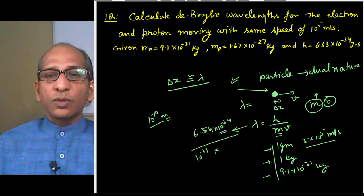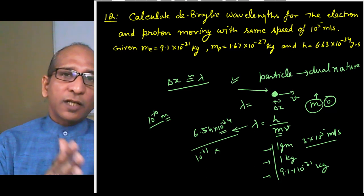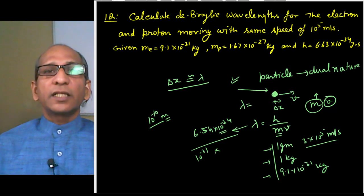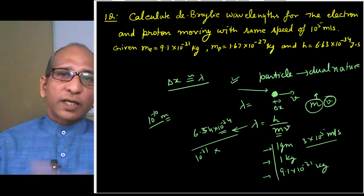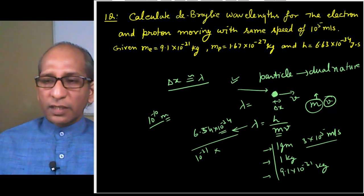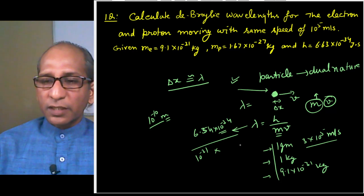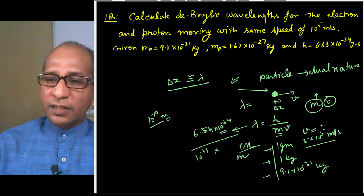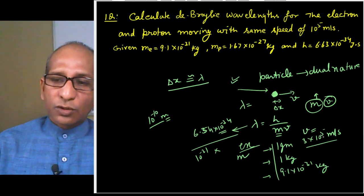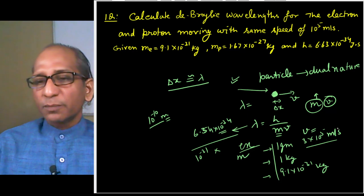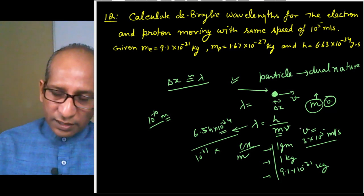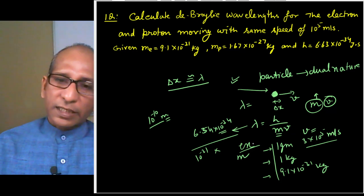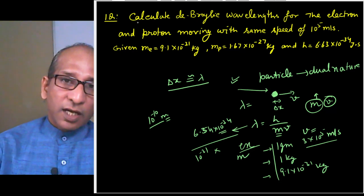In conclusion: if the size of a particle is comparable to its De Broglie wavelength, only then will it show dual nature; otherwise it will not. You can verify this by substituting different mass values. For a macroscopic object (1 gram or 1 kg), the wavelength becomes negligibly small compared to its size, so it does not exhibit wave nature.